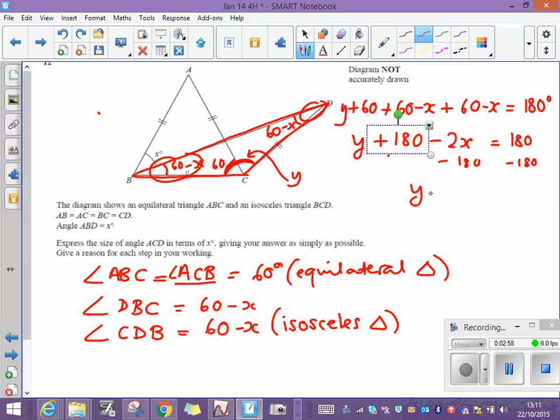on the left side I'm going to be left with y minus 2x, and on the right-hand side I'm left with 0. And if I now add 2x to both sides, I've got y is equal to 2x.